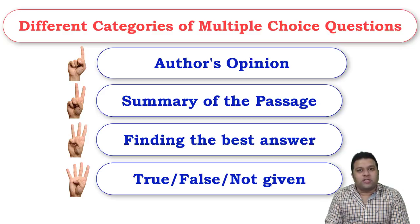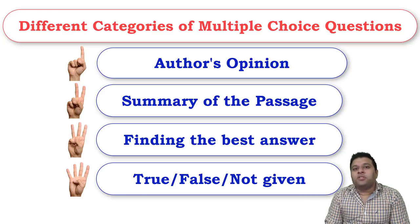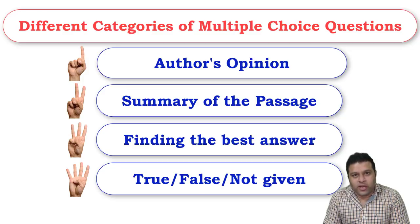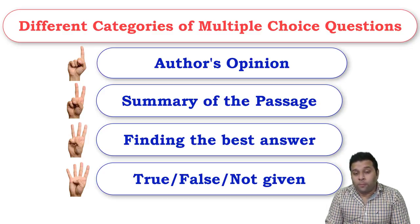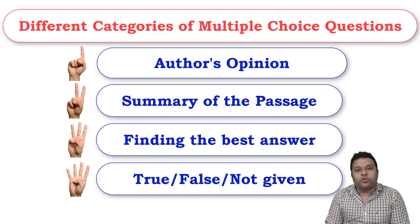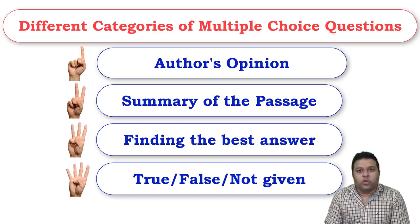We normally cover all these question types in our online classes, but today I'm going to talk about important strategies — first, how to solve questions about author's opinion, and then how to solve true, false, and not given questions: which of the following is true, which is false, which is not given. Please watch the full video if you really want to solve these questions properly.